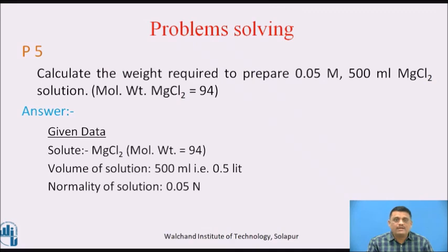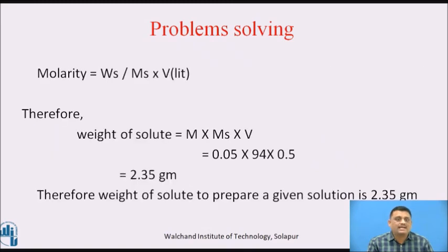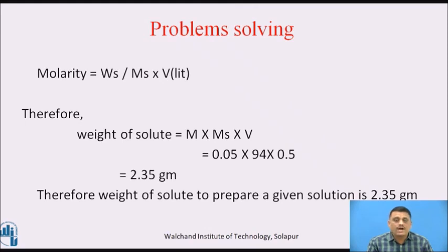Problem 4: Calculate the weight required to prepare a 0.05 molar, 500 ml MgCl₂ solution. Given solute is MgCl₂, molarity = 0.05. Using the formula: M = Ws / (Ms × V), where Ws is weight of solute and Ms is molecular weight of solute. Since molarity is given and we need to find Ws, the modified formula becomes Ws = M × Ms × V. By putting in the values, we get the answer 2.35 grams. Therefore, the weight of solute required to prepare the said solution is 2.35 grams.